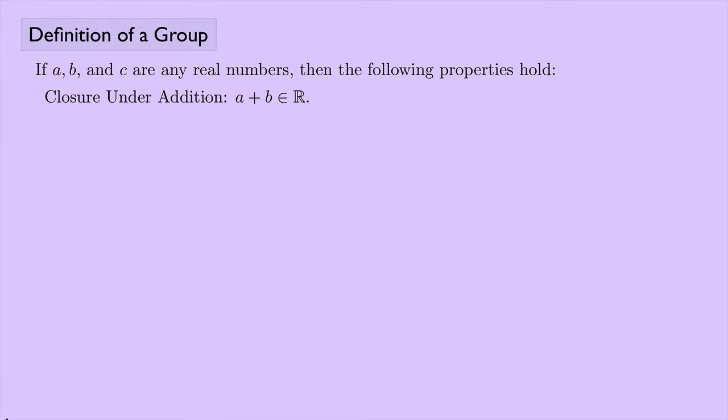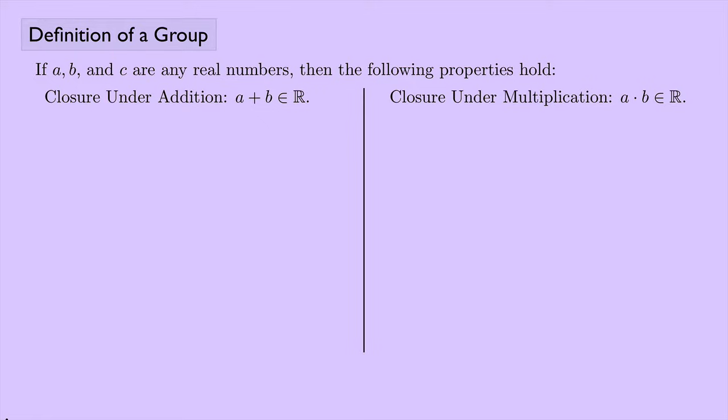First we have closure under addition. That means if you take any two real numbers and add them together, you get back another real number. And then we have the analogous property for multiplication: take two real numbers, multiply them together, and you get a real number.